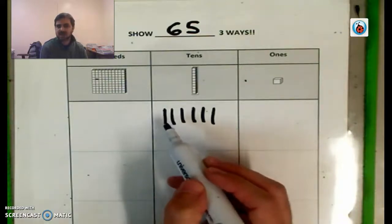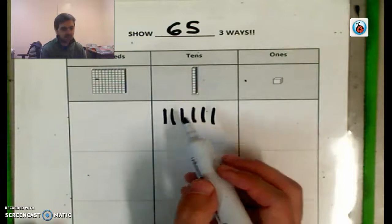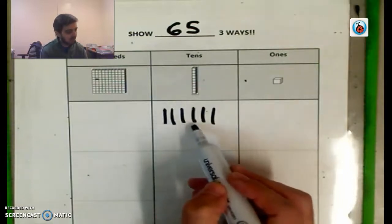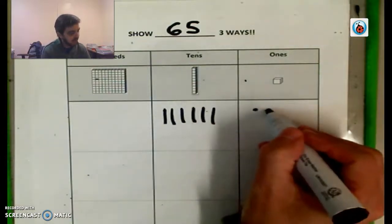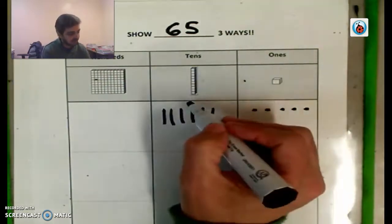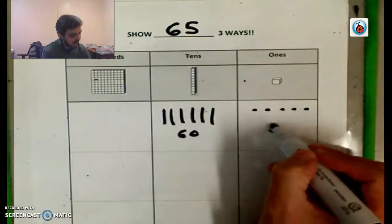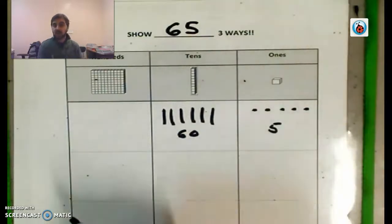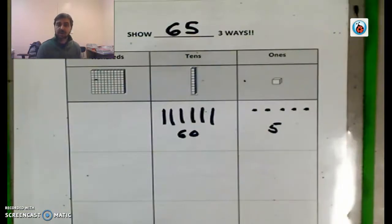So this line represents a bag of 10 Skittles. So we have 10, 20, 30, 40, 50, 60, 61, 62, 63, 64, 65. So we have 65. So that's one way we could show it, right?